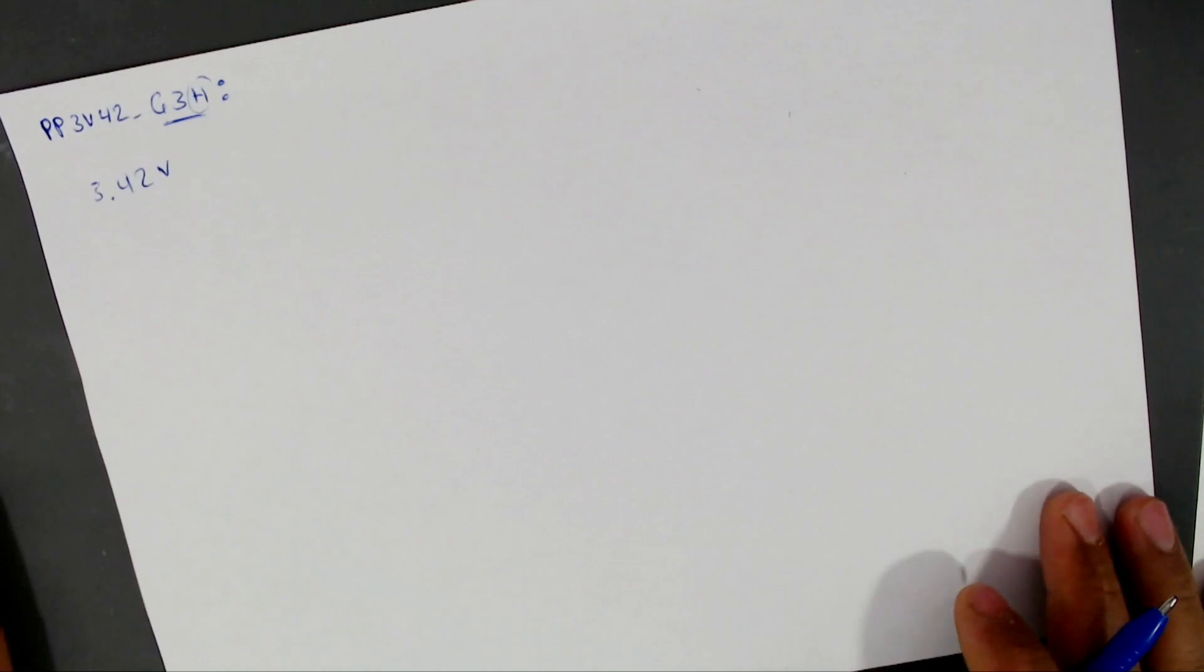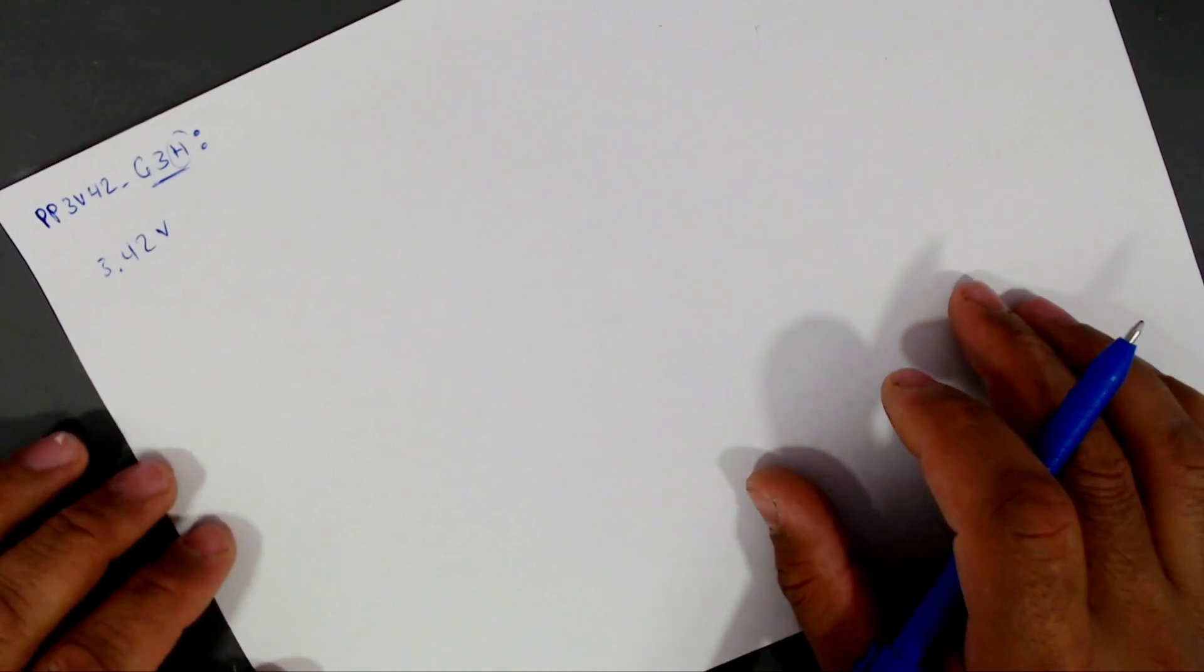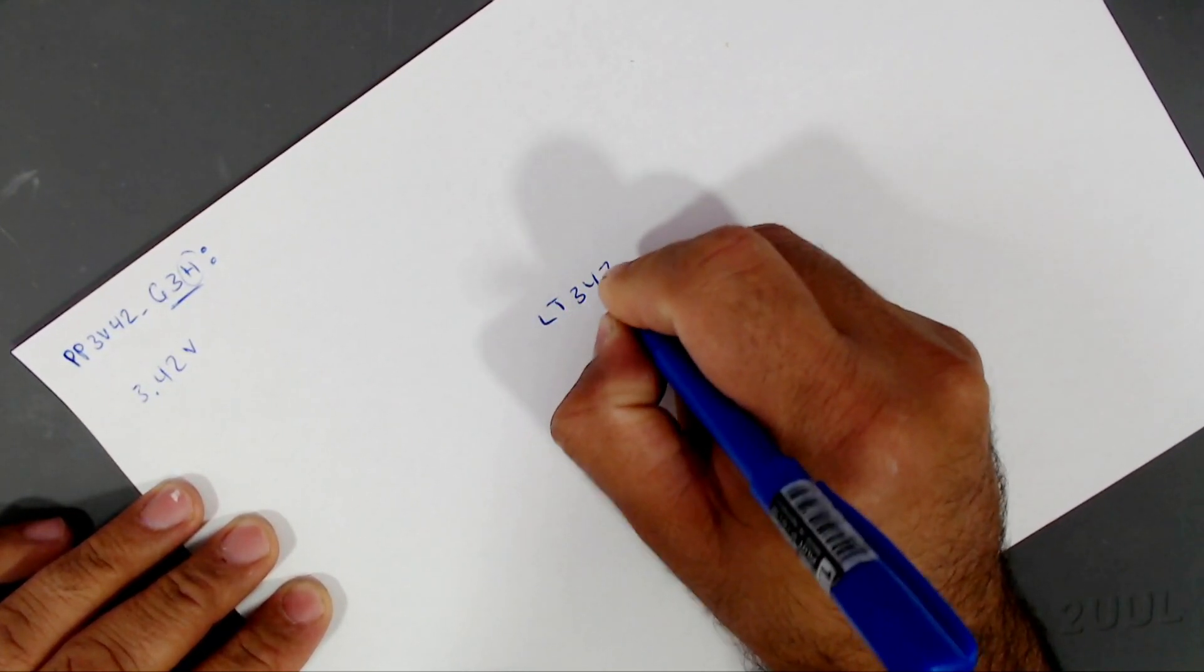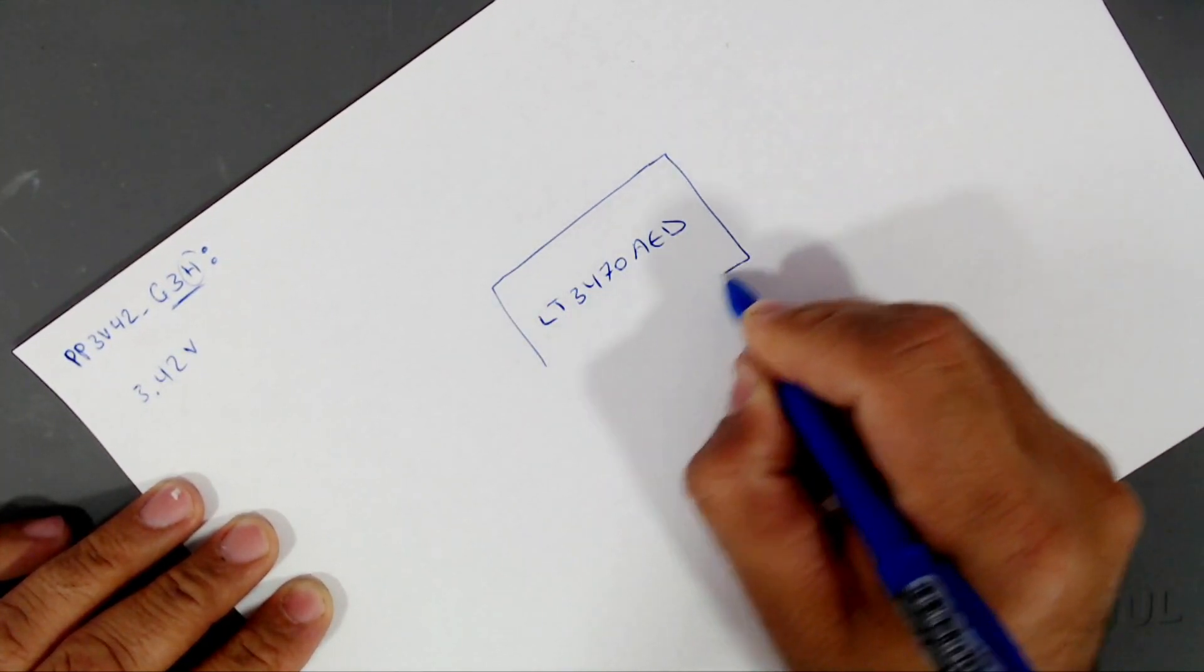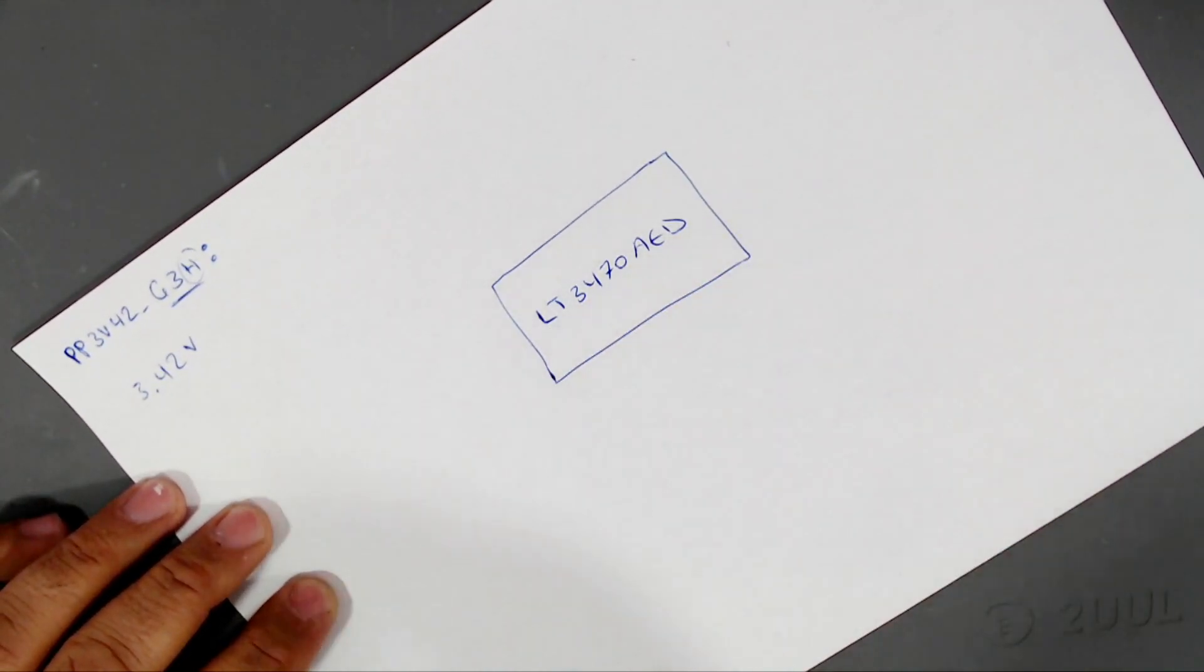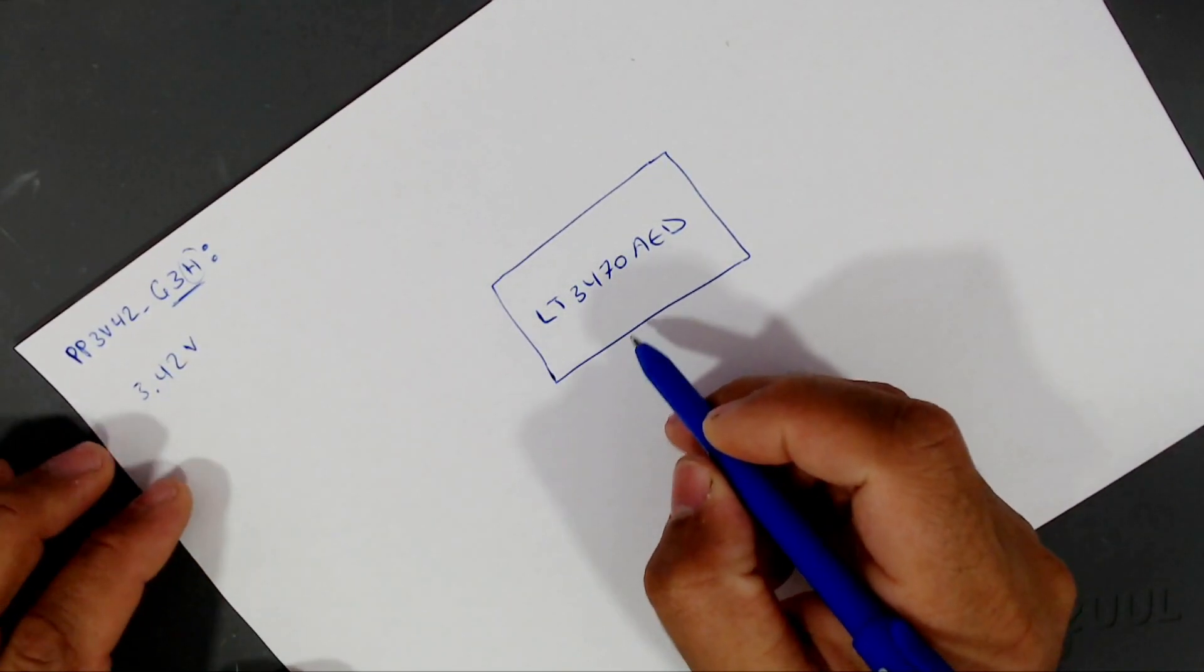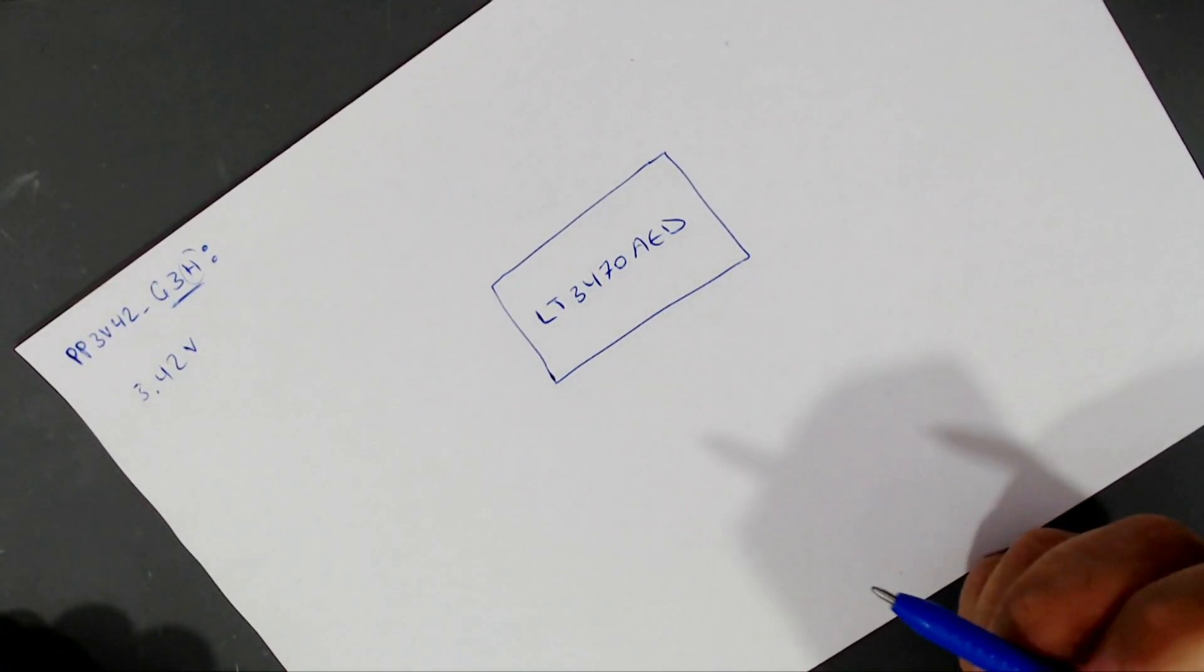How is this voltage created? There is a voltage regulator chip, normally they use LT3470AED chip. So if you find this chip on your MacBook motherboards, then you will know immediately that this chip is responsible for the 3.42V power rail.